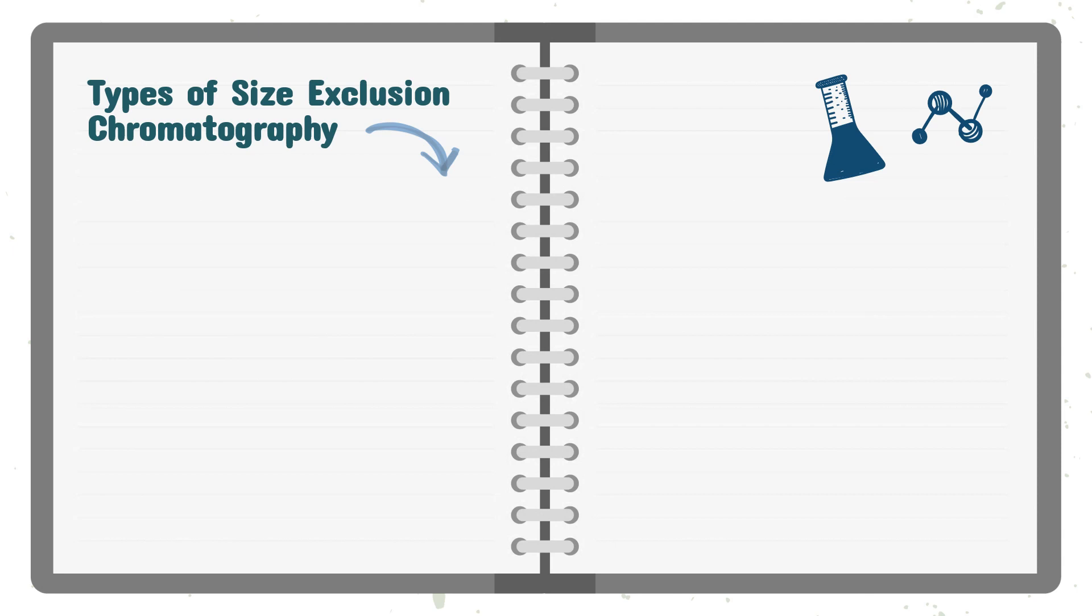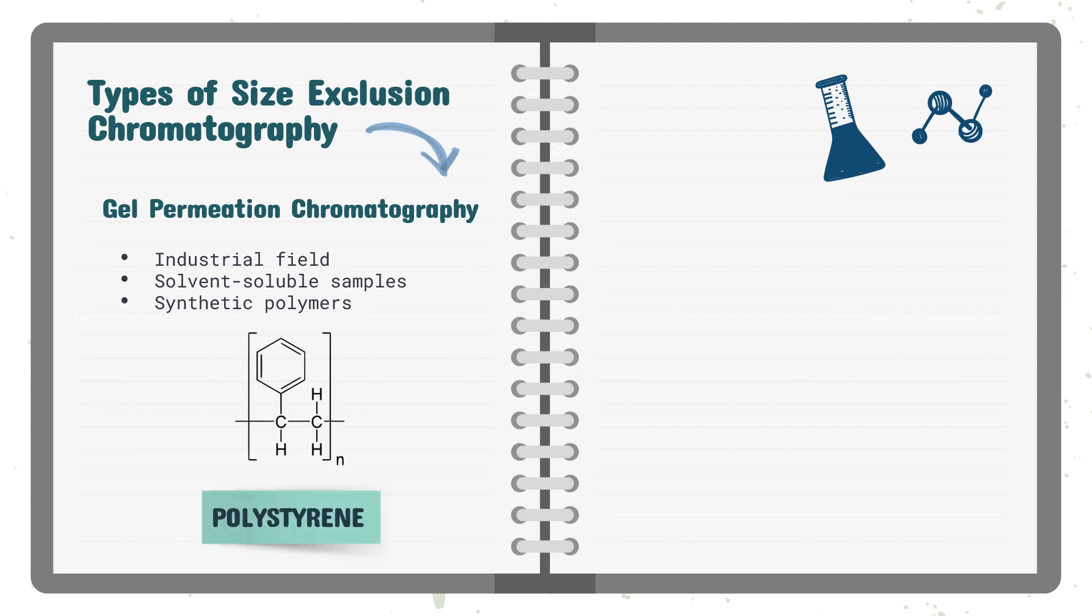There are two types of size exclusion chromatography. One is gel permeation chromatography, which is usually used in the industrial field. It uses cross-linked polystyrene polymer packing material and a nonaqueous mobile phase to separate and measure the molecular weight distribution of solvent-soluble samples such as synthetic polymers. The standard used for calibration is polystyrene.